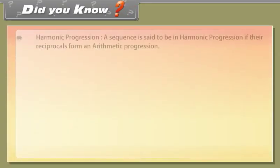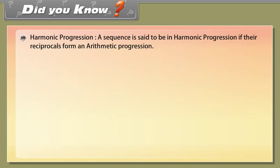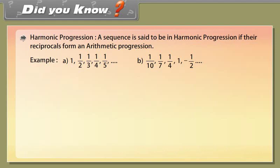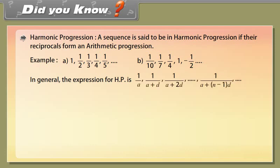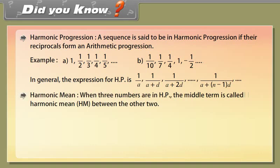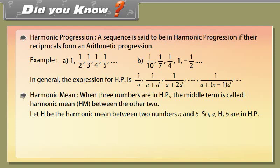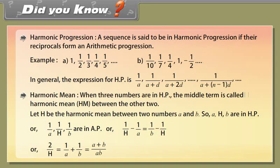A sequence is said to be in harmonic progression (HP) if the reciprocals form an arithmetic progression. Examples: 1, 1/2, 1/3, 1/4, 1/5, and so on; and 1/10, 1/7, 1/4, -1, -1/2, and so on. When three numbers are in HP, the middle term is called the harmonic mean. Let H be the harmonic mean between A and B. So A, H, B are in HP, meaning 1/A, 1/H, 1/B are in AP. Therefore H = 2AB / (A+B).